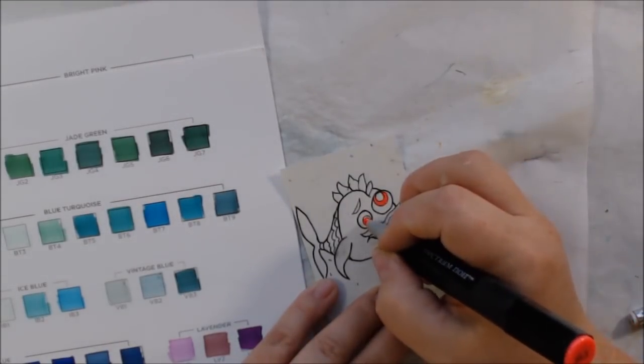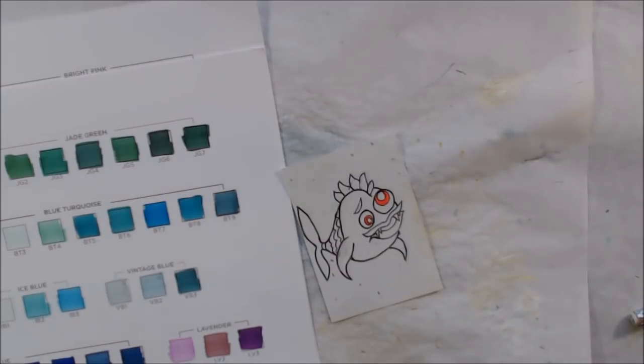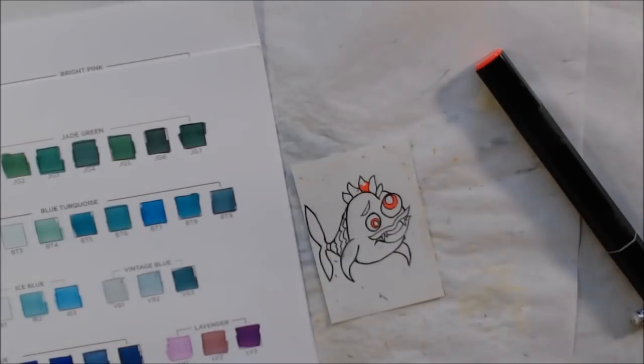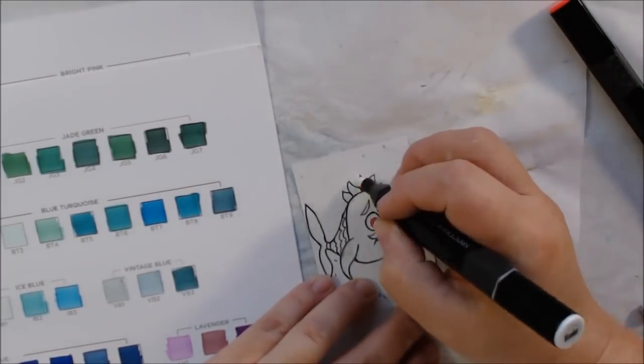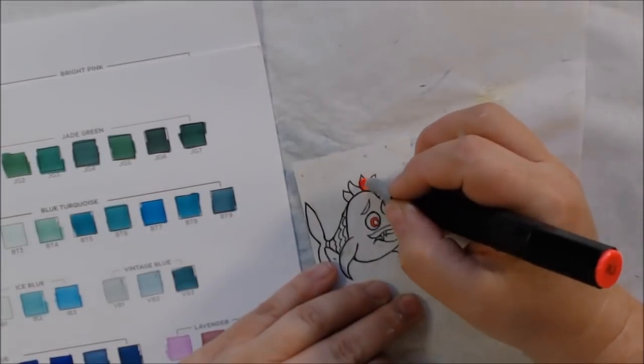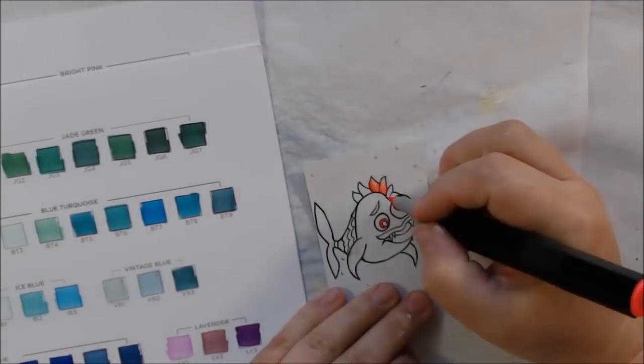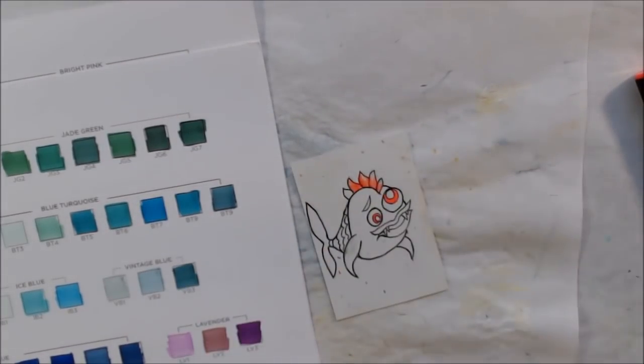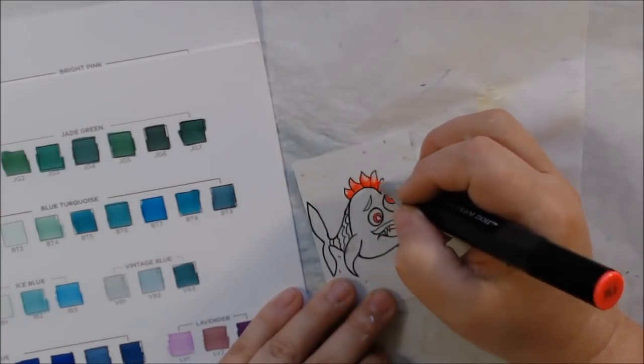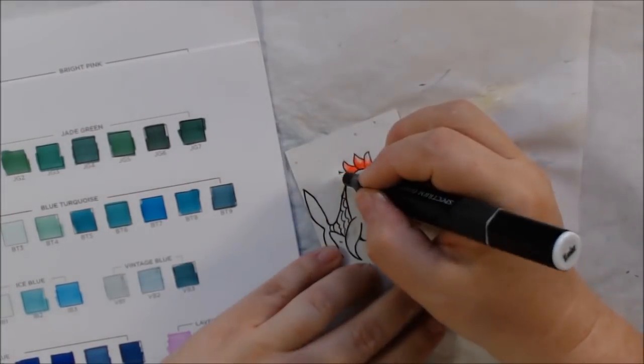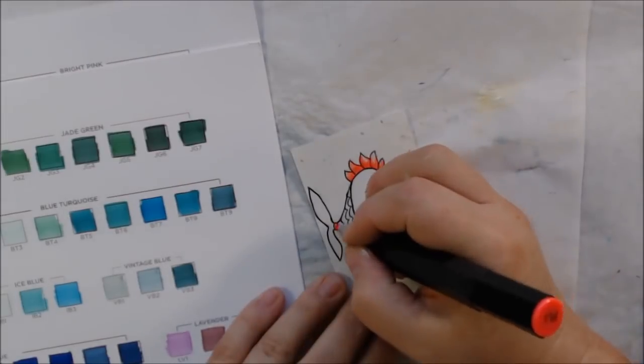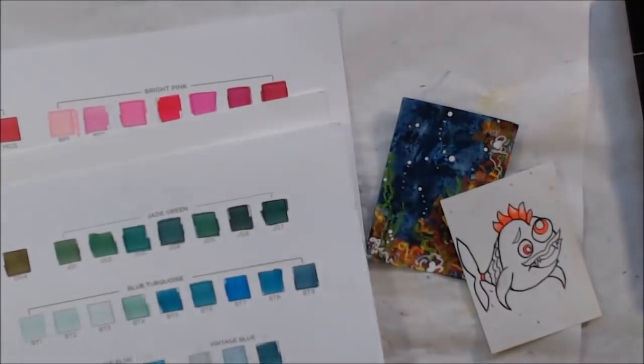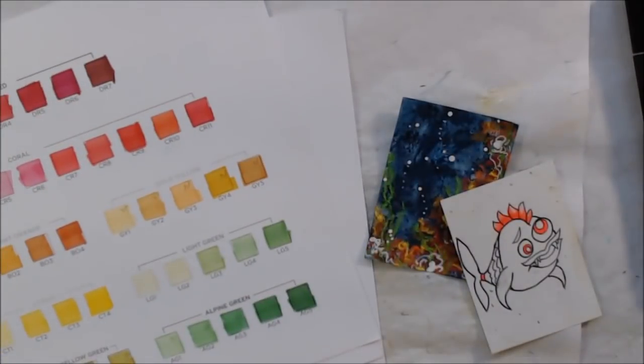Then I get out my charts for my Spectrum Noir alcohol markers, which I planned to color this with. I really couldn't find in my huge set of markers quite the colors I wanted. I was trying to do some varied coloring where you use different tones of the same color to make the coloring more interesting, but I wanted to use this fluorescent pink, fluorescent orange. I thought that color went well with my background, and I didn't really have anything to go with it, so then I was looking for other colors.